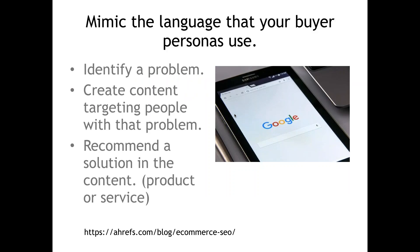Ideally, we should mimic the language that our buyer personas would use. When you're marketing, more often than not your user doesn't know what they want, or maybe they know what they want but don't know whether they should get it from you. The way to market ideally — whether through social media or your website — must touch on three things: first, identify a problem; second, create content targeting people with that problem; third, recommend a solution in the content, whether it's your product or service.